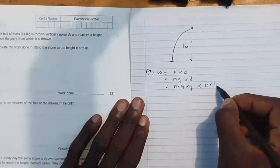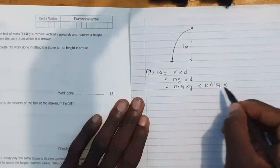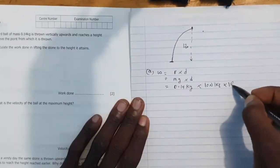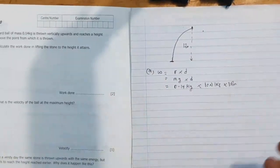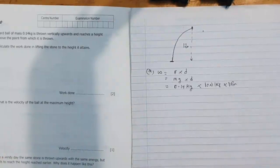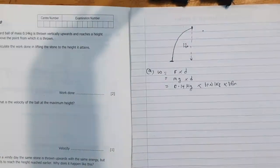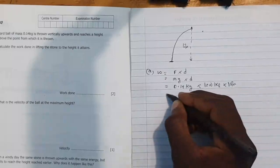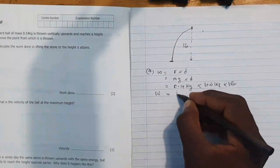So our mass here is 0.14 kg times the gravity is 10 newton per kg times the distance moved is 12 meters. So we proceed to multiply: 0.14 times 10 times 12, so we are getting work done as 16.8 joules. So this is the work done.